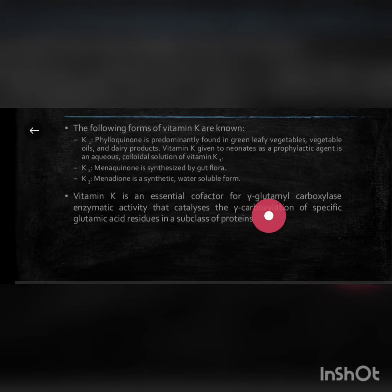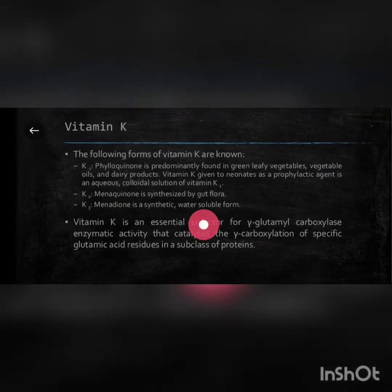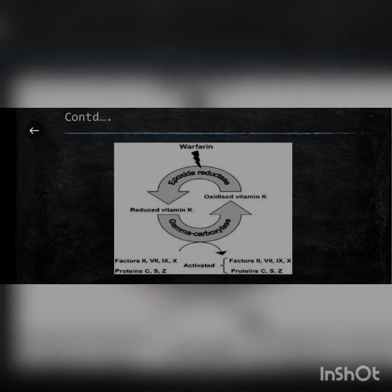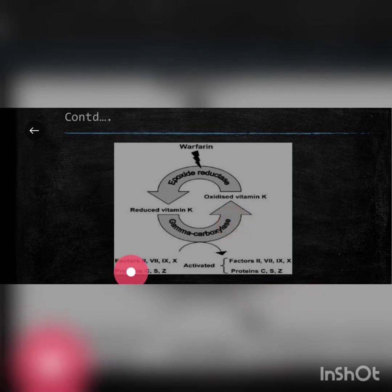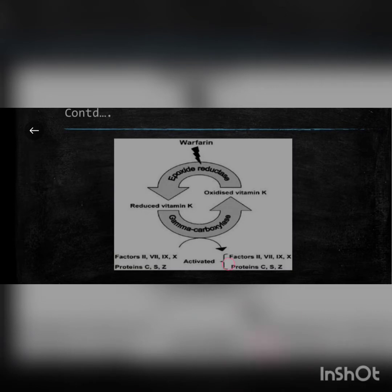Vitamin K is an essential cofactor for gamma-glutamyl carboxylase enzyme activity, which catalyzes the gamma-carboxylation of specific glutamic acid residues in a subclass of proteins. In this reaction, oxidized vitamin K is converted to reduced vitamin K by the enzyme epoxide reductase, and reduced vitamin K is converted back to oxidized vitamin K in the presence of gamma-carboxylase. During this reaction, inactivated factors 2, 7, 9, 10 along with proteins C, S, and Z are activated.